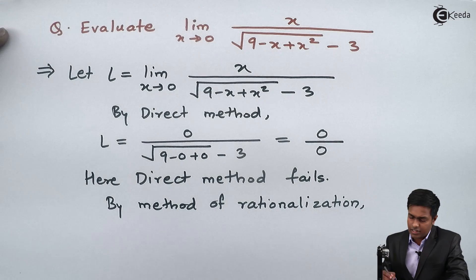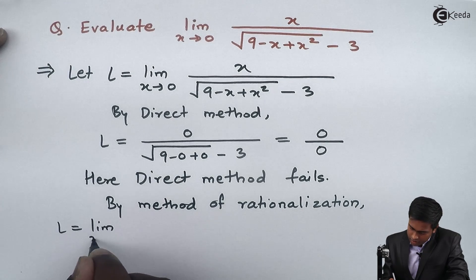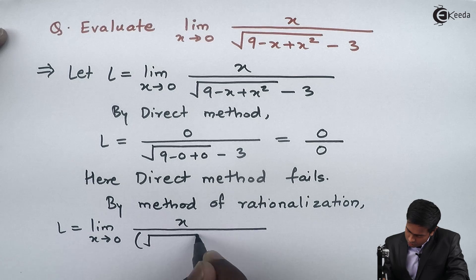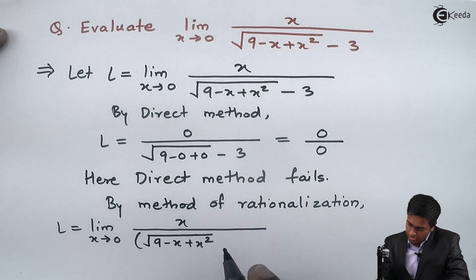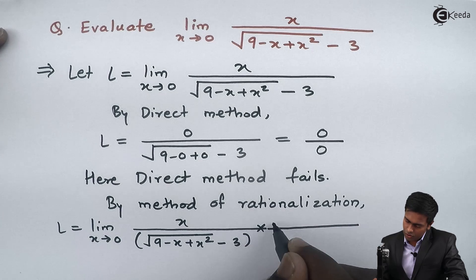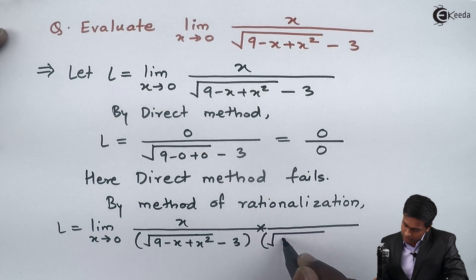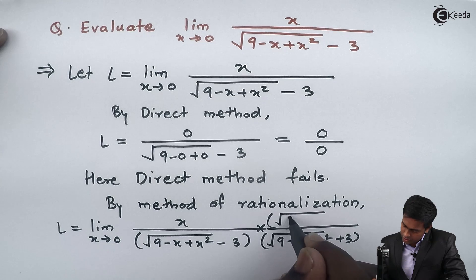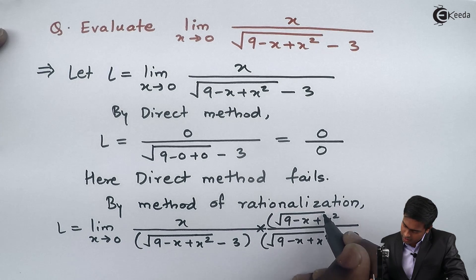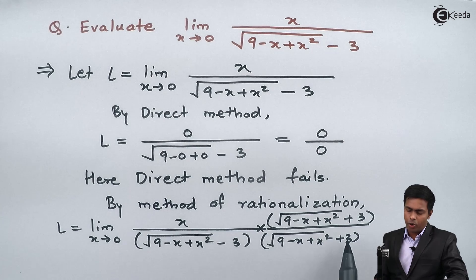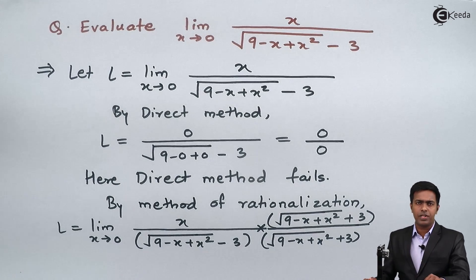By the method of rationalization, we get L as the limit x tends to 0 of x upon square root of 9 minus x plus x squared, minus 3. Multiplying by the conjugate: square root of 9 minus x plus x squared plus 3, in both numerator and denominator. In the denominator we now have the form (a minus b)(a plus b), to which we can apply the formula a squared minus b squared.